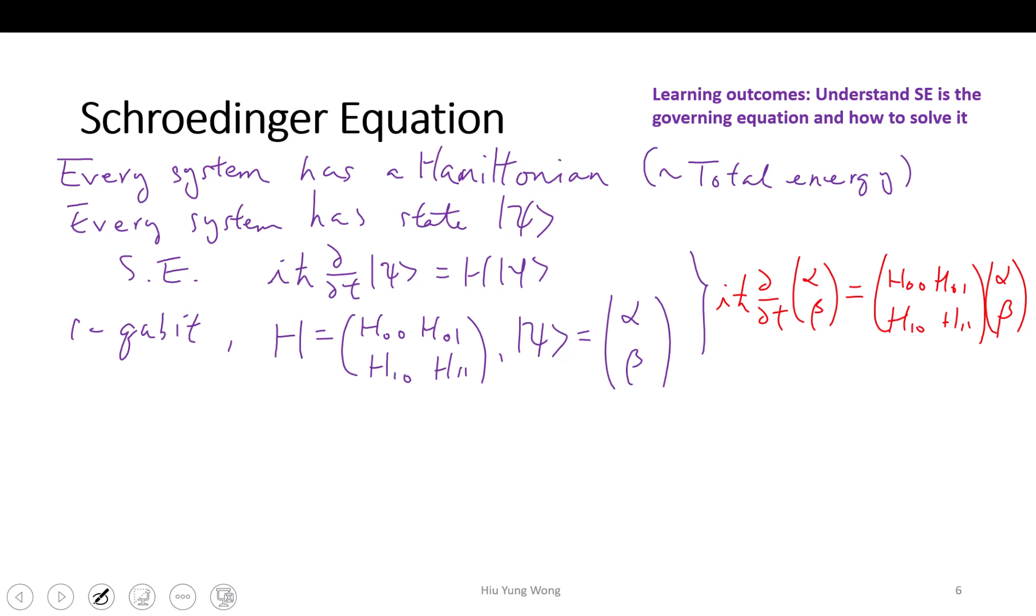Right? Because I can then equate each row, right? The first row is i h-bar partial alpha partial t equals to—just do the matrix multiplication—H_0,0 times alpha plus H_0,1 times beta.